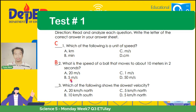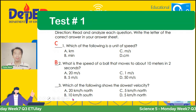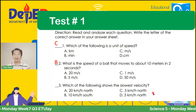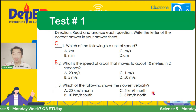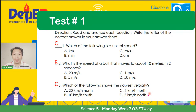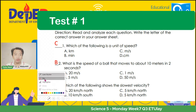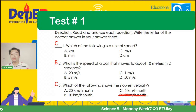We move on to item number 3. Which of the following shows the slowest velocity? A — 20 kilometers per hour north; B — 10 kilometers per hour south; C — 5 kilometers per hour north; D — 5 kilometers per hour north. If your answer is letter C, tama kayo. Paalala: ang C at D ay magkapareho lang naman, kaya dapat delete na ang isang item. So if your answer is C or D, then you are correct. Ang slowest velocity natin ay yung 5 kilometers per hour North.